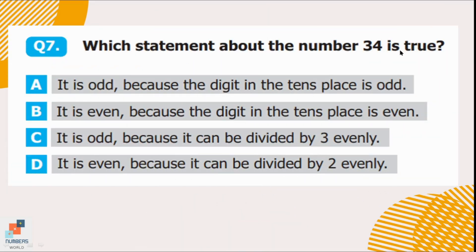Question number 7. Which statement about the number 34 is true? Option A says it is odd because the digit in the tens place is odd — that's incorrect because we look at the units place, not the tens place, to determine odd or even. Option B says it is even because the digit in the tens place is even — the tens digit is 3, which is not even, so option B is wrong. Option C says it is odd because it can't be divided by 3 evenly — that's incorrect. Option D says it is even because it can be divided by 2 evenly — that's correct, since the units digit is 4, which is divisible by 2. So, option D is correct.